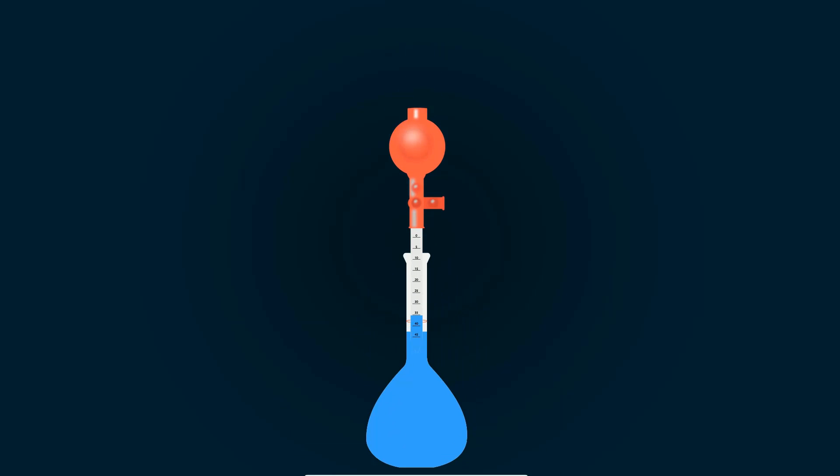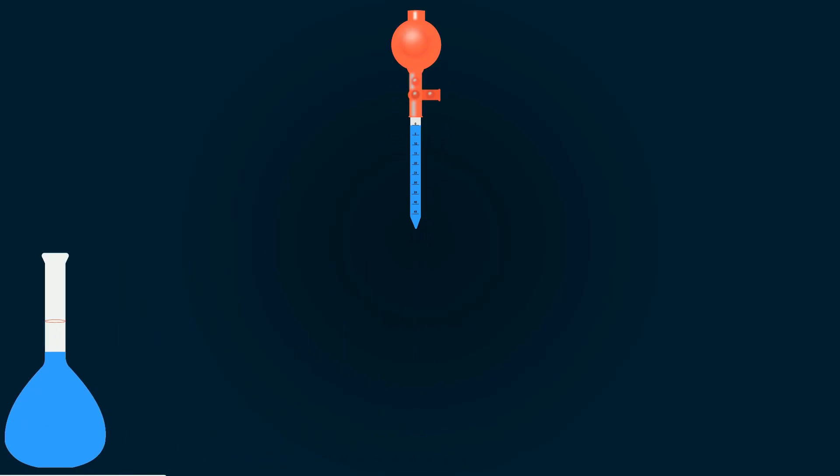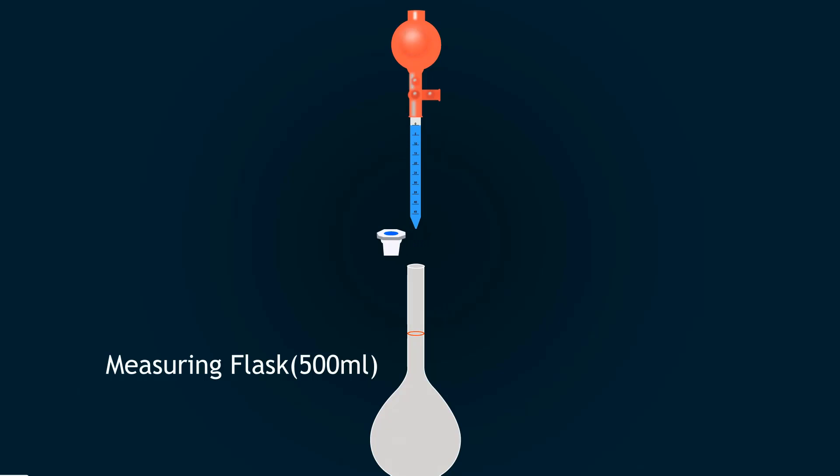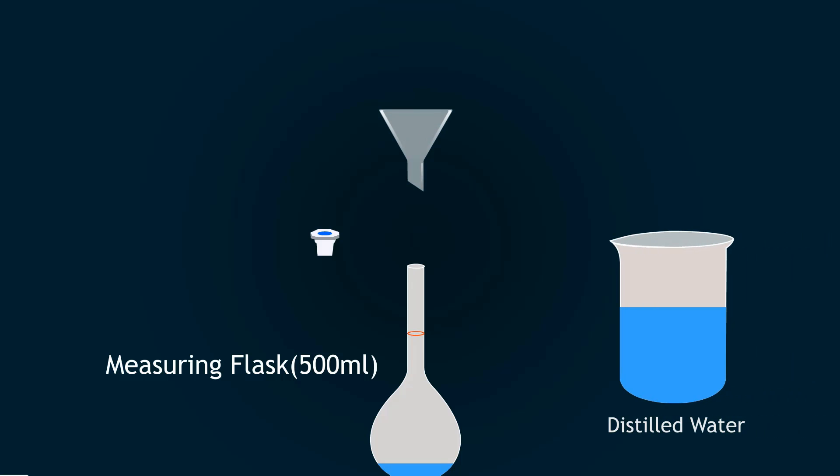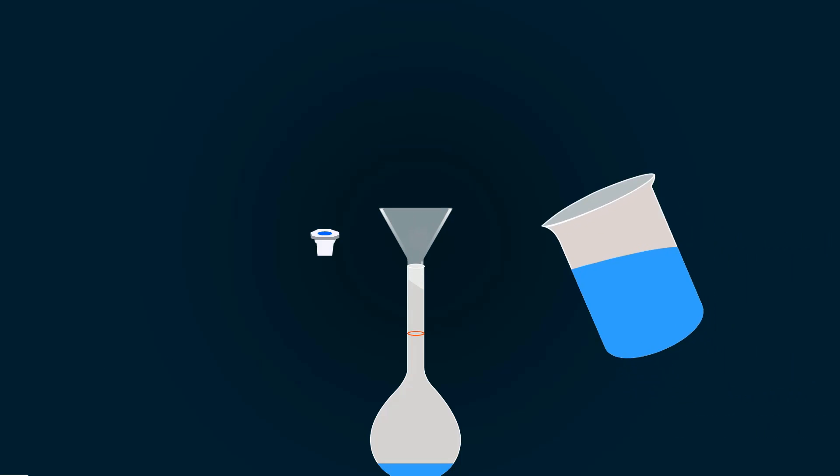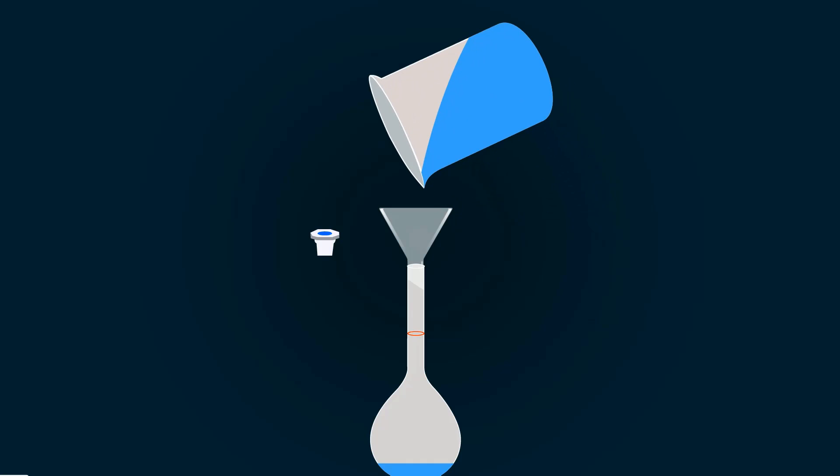Pipette out 50 ml and put it into the measuring flask. You can easily see the red mark which indicates 500 ml. To complete to this mark, you should add distilled water from the beaker.